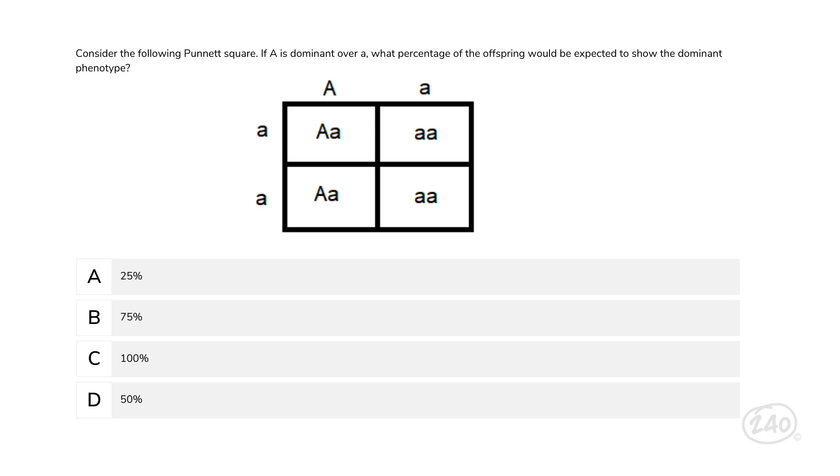Let's head over to life science and take a look at a Punnett square example. Consider the following Punnett square. If capital A is dominant over lowercase a, what percentage of the offspring would be expected to show the dominant phenotype? Any organism that contains a dominant gene will show the dominant trait. Two of the four boxes here contain a dominant gene, the capital A. So 50% of offspring would be expected to show the dominant phenotype.